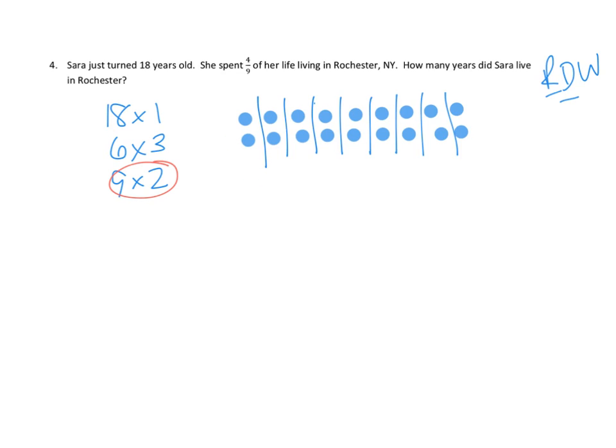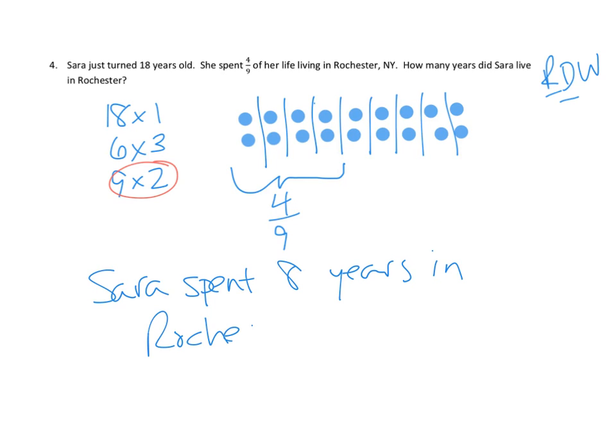And now we get to this last question, right? Which is, she spent four ninths of her life. Well, four ninths, I guess that would be that much, right? Four ninths of her life. And how many years are in four ninths of her life? One, two, three, four, five, six, seven, eight. Eight, so eight years, it looks like Sarah spent eight years in Rochester.